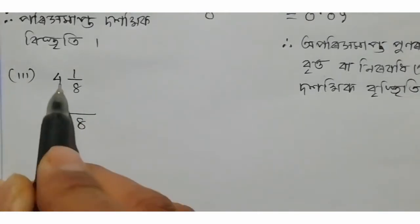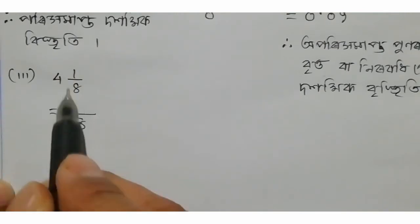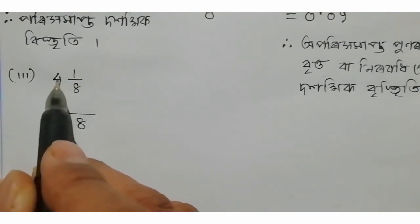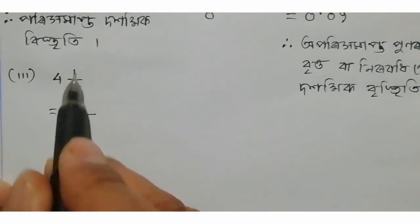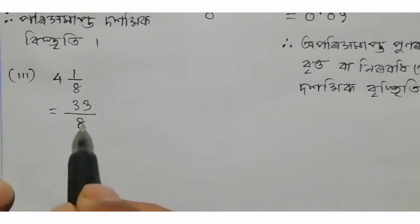Then we write: the break is 32, it's 38. The fiscal break is 33 by 8.